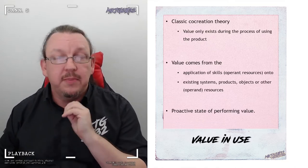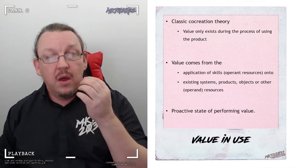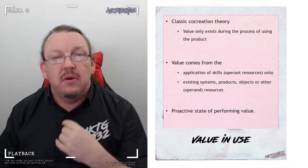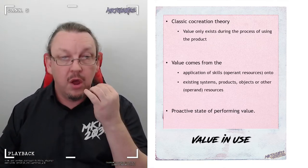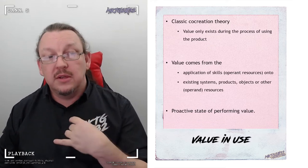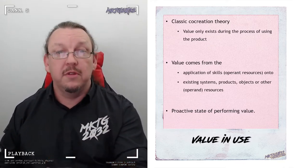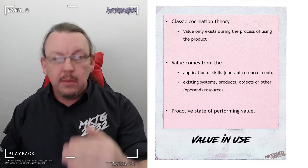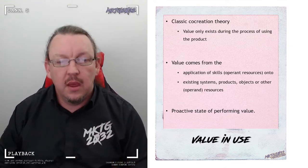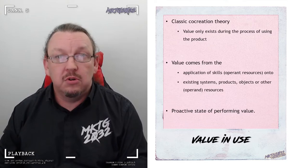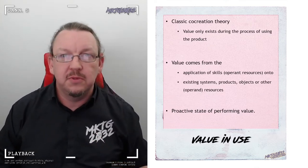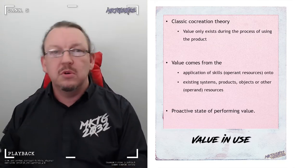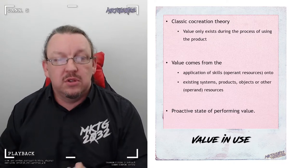The value and use quick recap and bringing us back to a couple of things that we have talked about previously in previous lectures. Value and use says that value only exists in the process of using the product, which means that value has to come from the co-production, co-presence of the operand resources, your skills, being applied to the operand resources, the value offer, the actual and augmented product of the value offer. It is very proactive state. It says that value must be performed, value must be an active process. So if you're thinking about your value, what it is you're going to provide, then if you're going down the value and use path, you want to be creating a hook so that people can go, I can take this and use it, or I can respond to it and react to it.